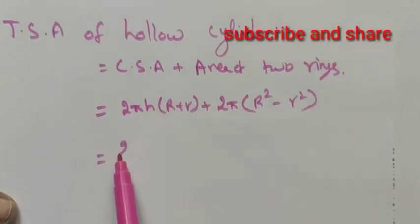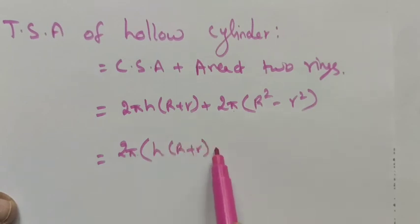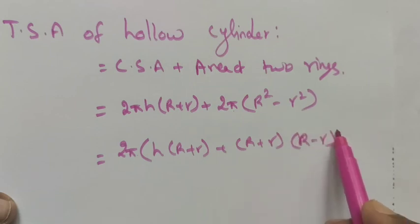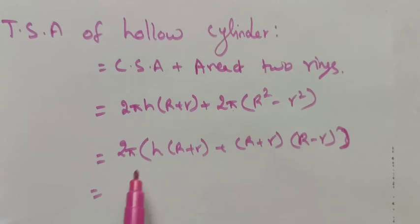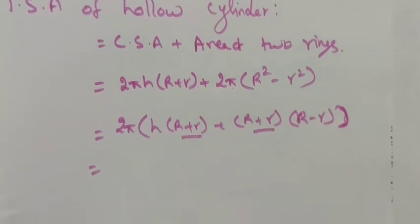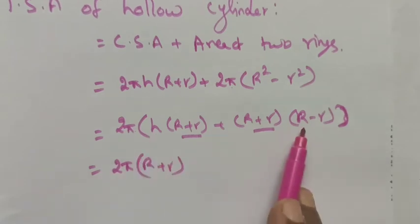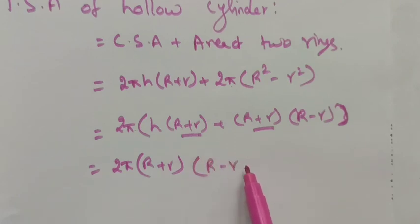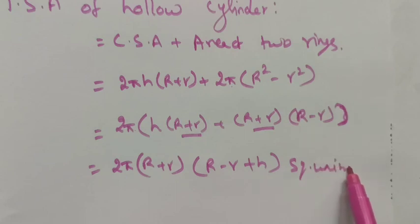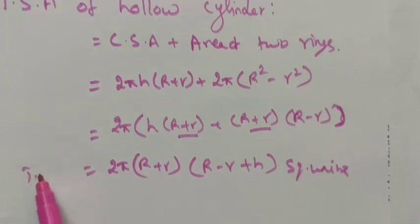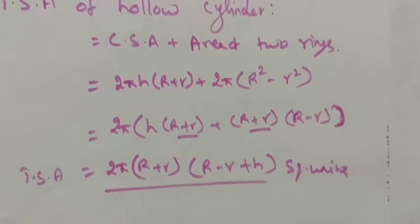This can be written with 2π taken out commonly: h(R + r) plus, using the identity a² - b² = (a+b)(a-b), we get (R + r)(R - r). Since (R + r) is common, we take it out: TSA = 2π(R + r)(R - r + h) square units. So the total surface area of the hollow cylinder formula is 2π(R + r)(R - r + h). Thank you, students.